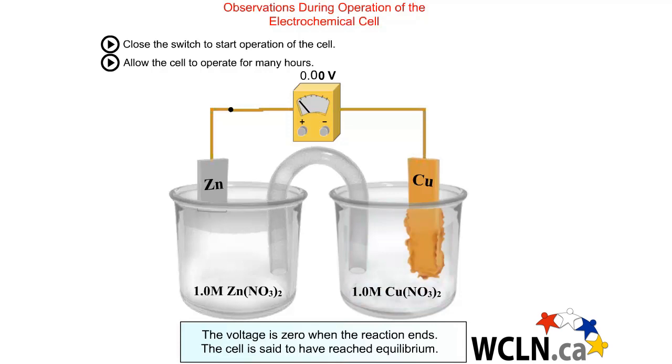When the voltage drops to zero, the cell is said to have reached equilibrium. In common language, people would say my battery has died.